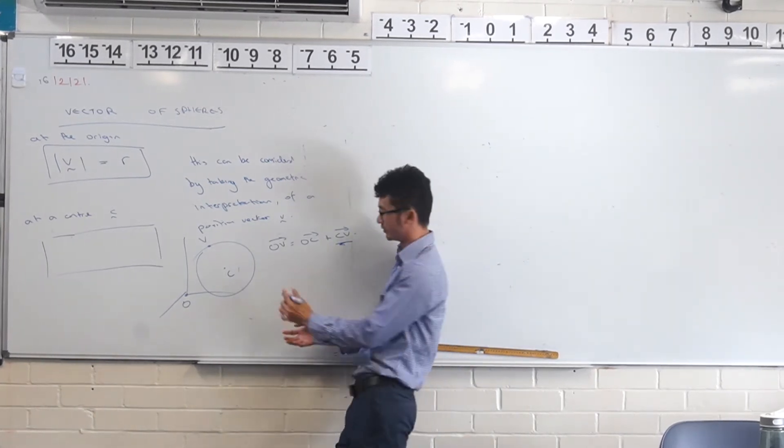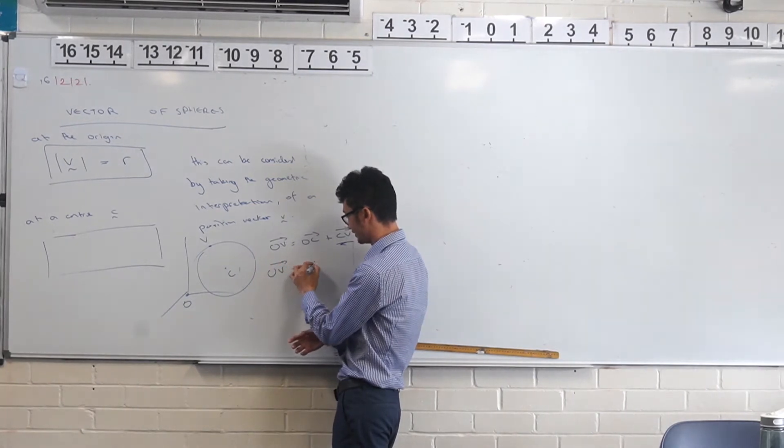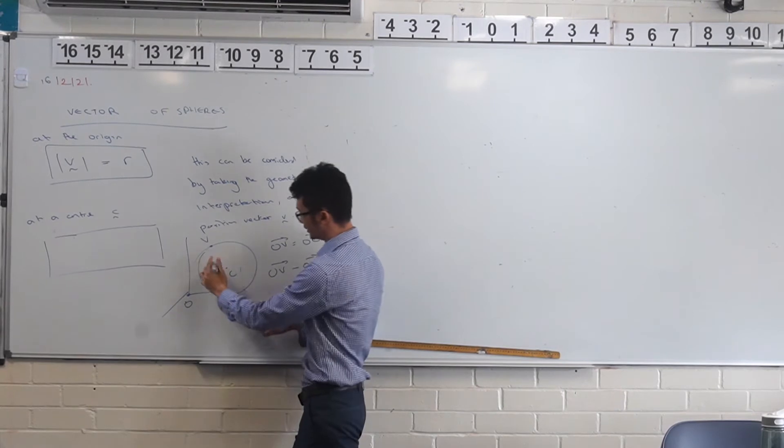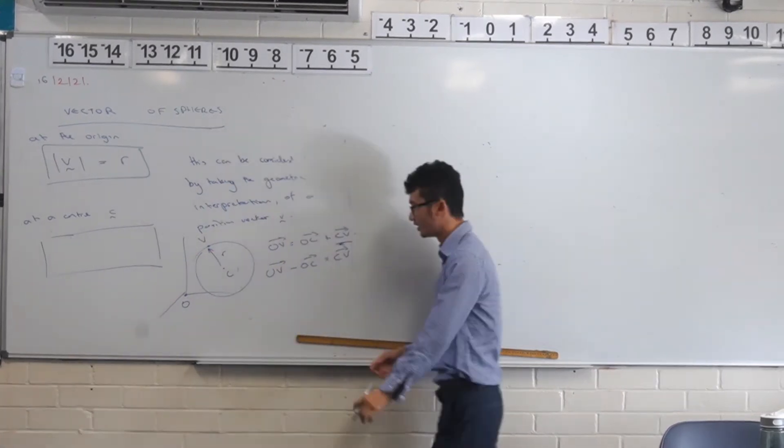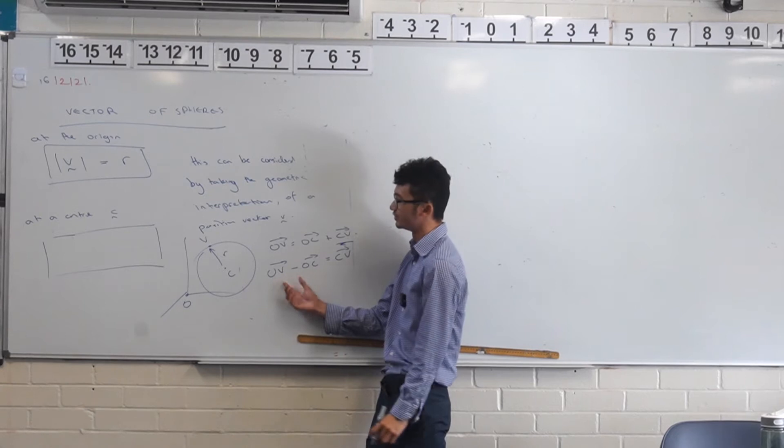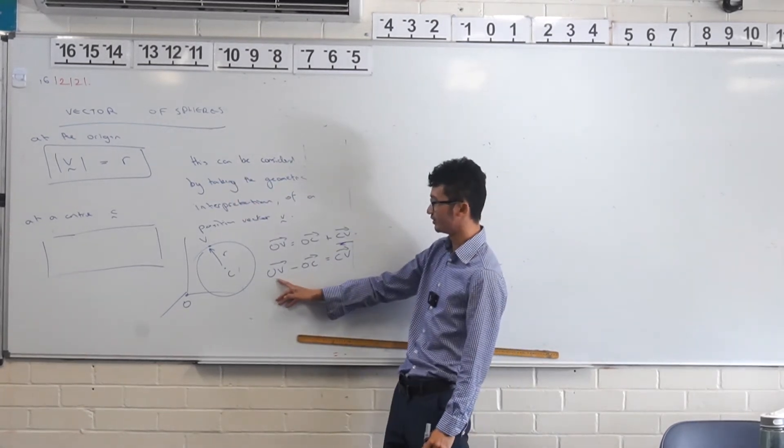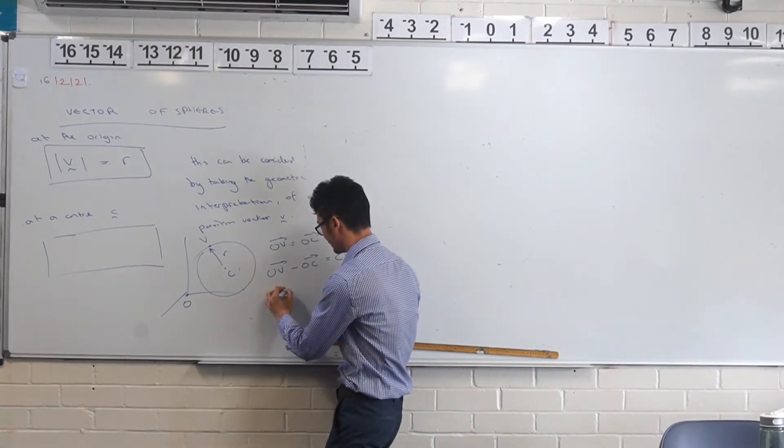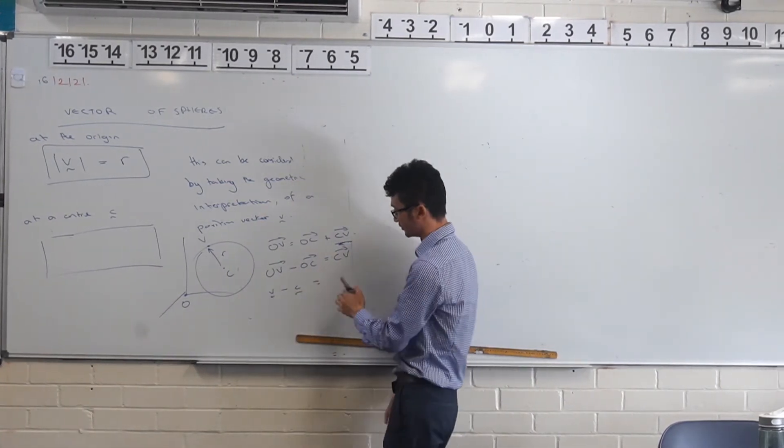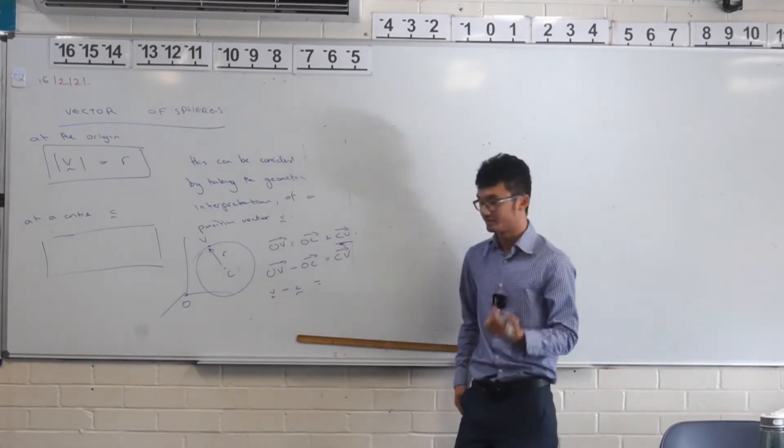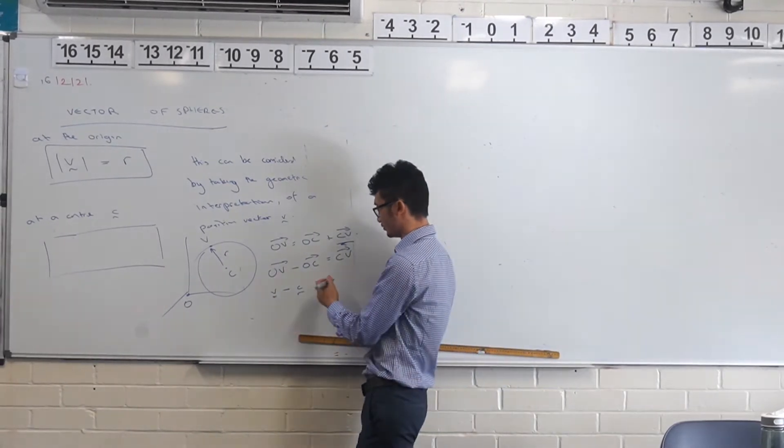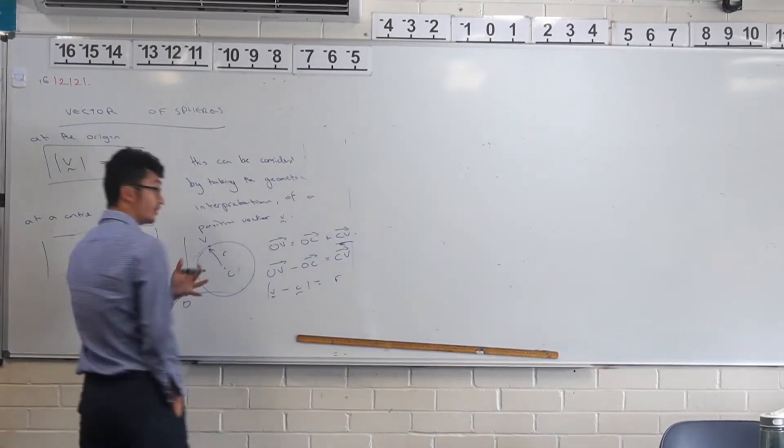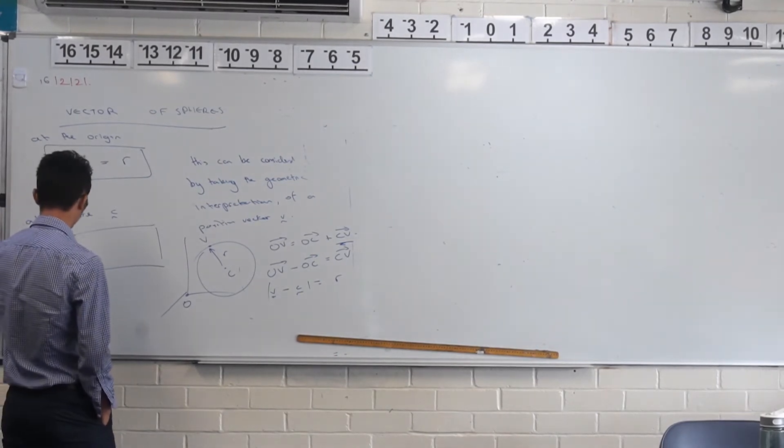So we could just rearrange it. We could get OV minus OC, right? Because we're only interested in this, this is going to be our radius here. We could just represent that as vector V, and then this would just be vector C. So this is essentially our vector equation which you've developed. Really good job.